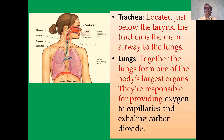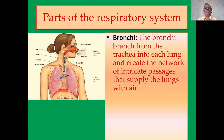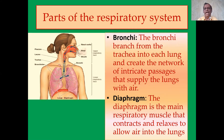The next part is the lungs. The lungs form one of the body's largest organs — the largest organ is the skin, but the lungs are also considered a large organ. They are responsible for providing oxygen to capillaries and exhaling carbon dioxide, that means gas exchange. The bronchi branch off the trachea into two lungs, right and left, and create a network of passages that supply the lungs with air. After the bronchi are the bronchioles. The diaphragm is the main respiratory muscle that contracts and relaxes to allow air in — inhaling and exhaling.